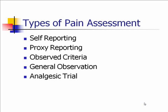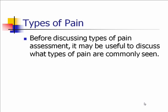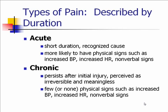Before discussing types of pain assessment, it's useful to review what types of pain are commonly seen. Pain can be described by duration. Acute pain has short duration and a clearly recognizable cause — you're more likely to see physical findings such as increased heart rate, blood pressure, grimacing, and other nonverbal signs. Chronic pain persists after the initial injury and can be ongoing for a long period, usually caused by some sort of pathologic process.